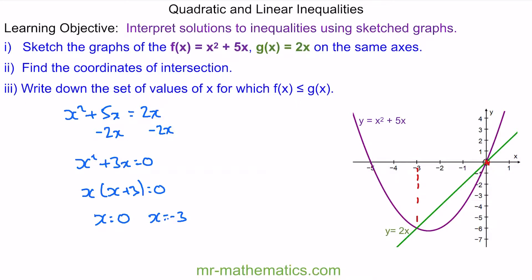We can solve this inequality. This will be where the parabola is below the green line. So x is greater than or equal to 0, but less than or equal to 3.